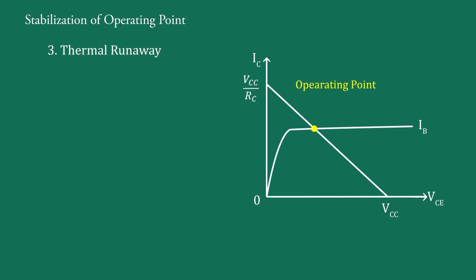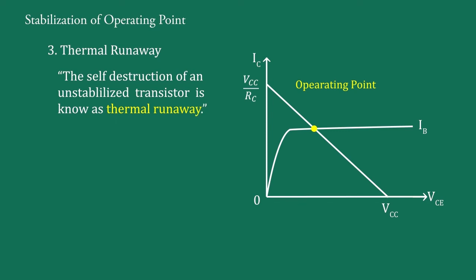Third, thermal runaway. The self-destruction of an unstabilized transistor is known as thermal runaway. The collector current for a common emitter connection is given as IC equal to beta IB plus beta plus one ICO.